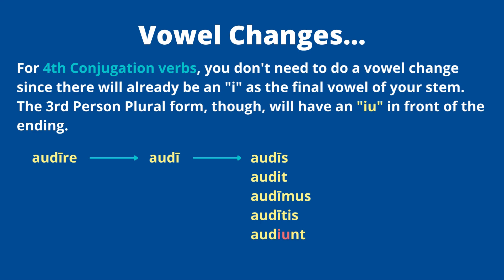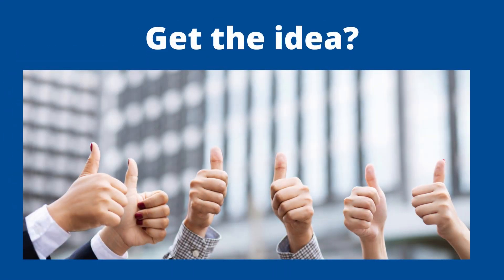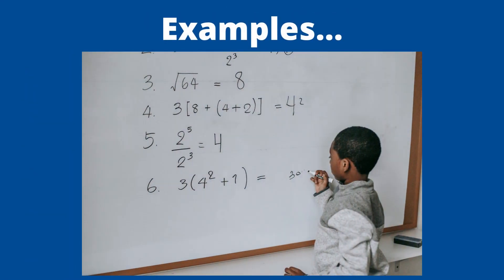There are some vowel flips that need to happen, and paying attention to the conjugation of your verb is the most important thing. Hopefully this makes some sense — it's really just memorizing a couple of rules and patterns, and it follows the same process every single time. Let's take a look at some examples.